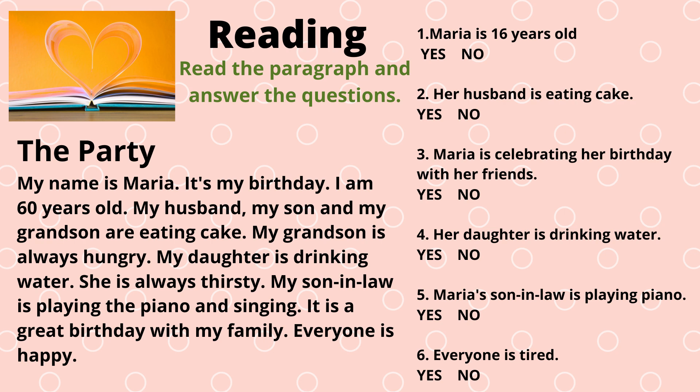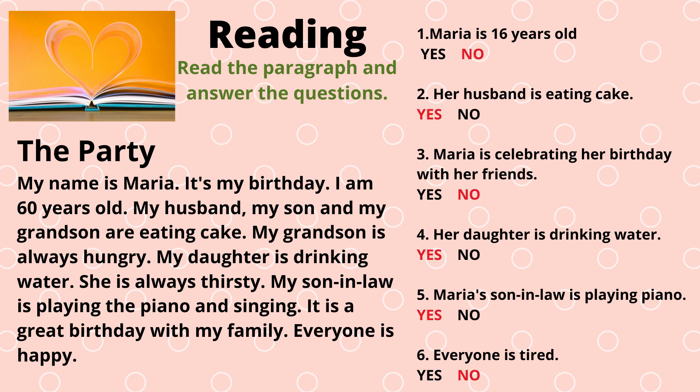All right class, let's see how we did. Number one says Maria is 16 years old — answer no. Maria is 60 years old. Number two: her husband is eating cake — answer yes. Number three: Maria is celebrating her birthday with her friends — answer no. Maria is celebrating her birthday with her family. Number four: her daughter is drinking water — the answer is yes.